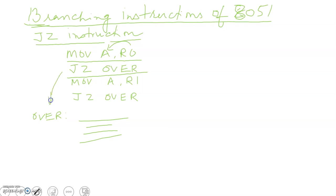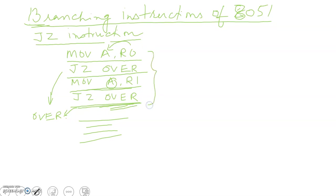If A is 0, control moves to the label 'over'; otherwise it goes on executing the next instruction. Here it moves a value R1 to A, then again checks whether the accumulator is 0 or not. If it is 0, it moves to 'over'; otherwise it goes on to execute the other instructions written after this JZ. Please remember that JZ operates on only the accumulator.